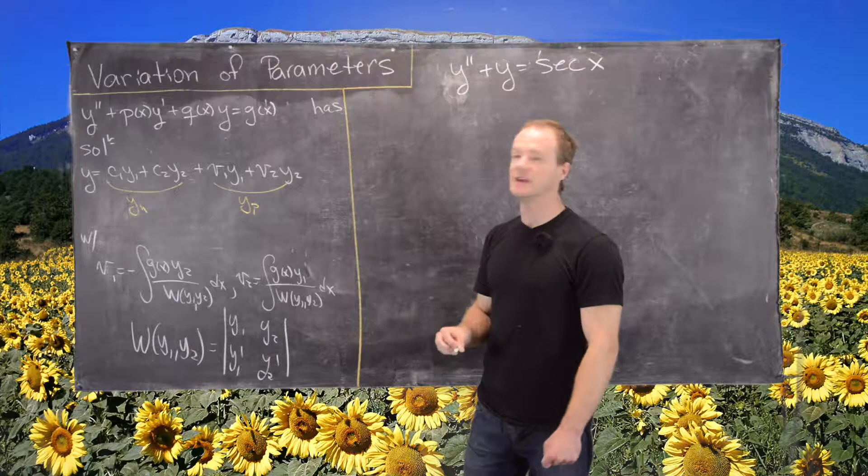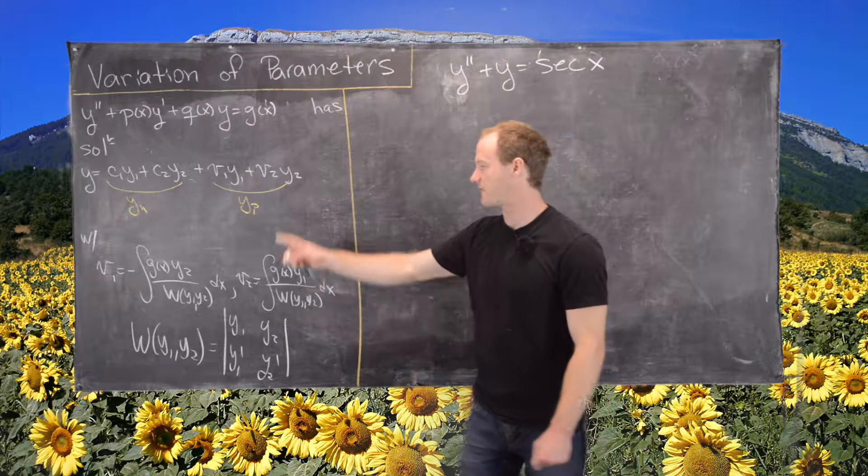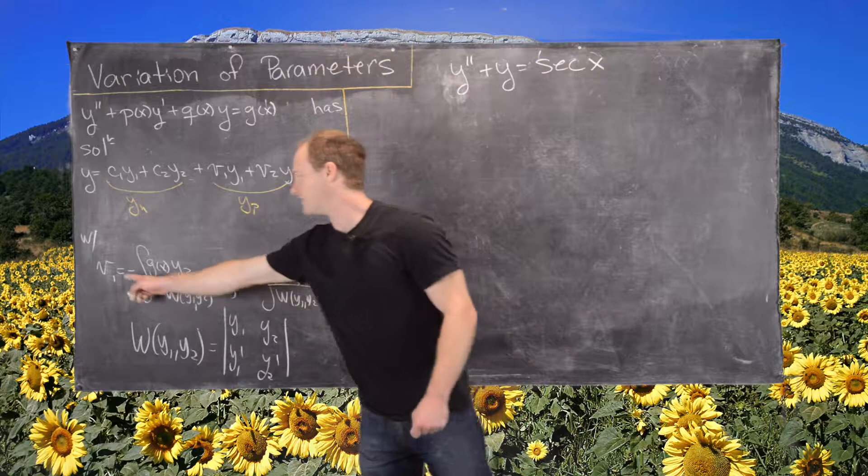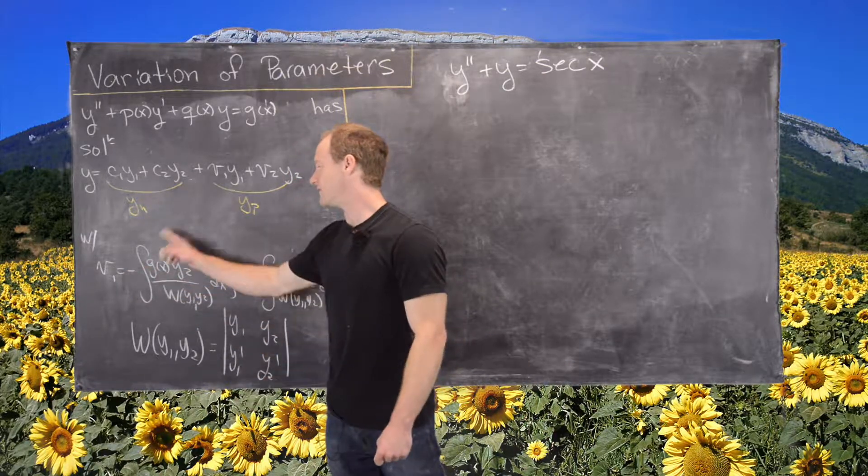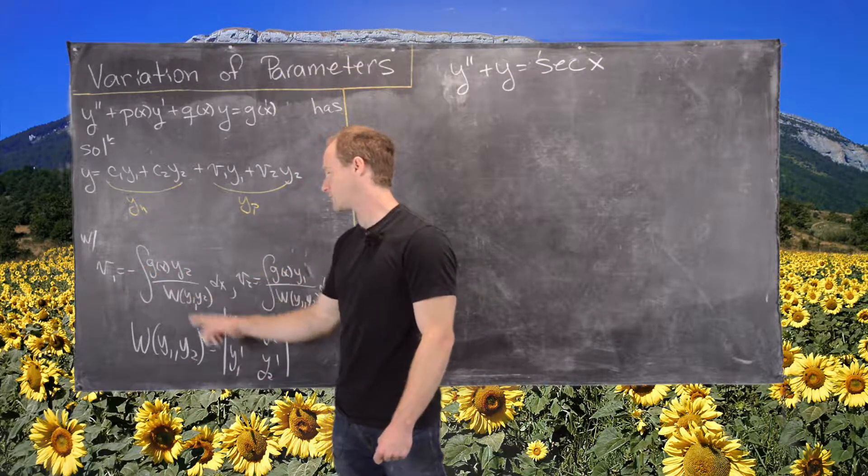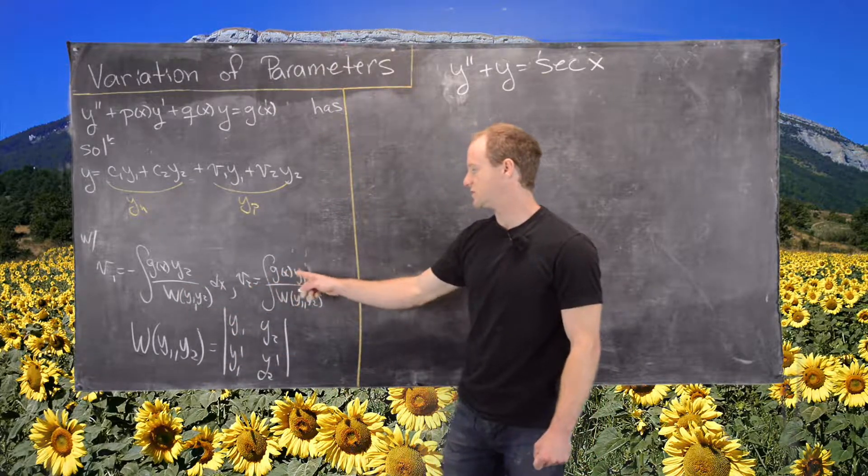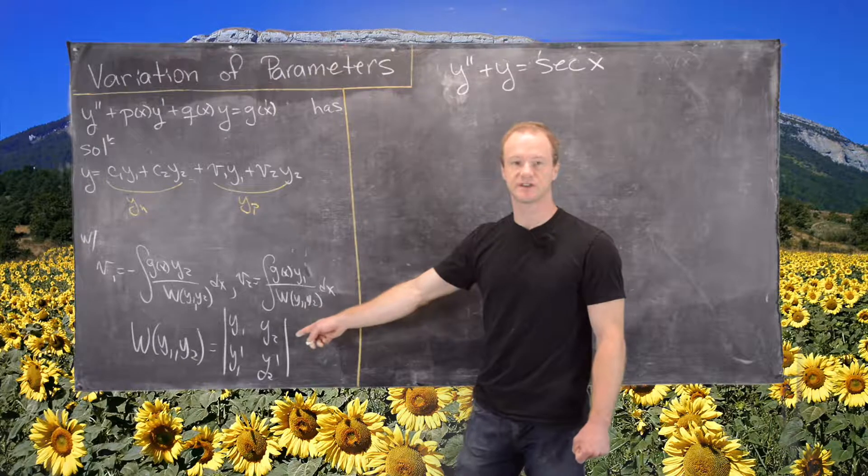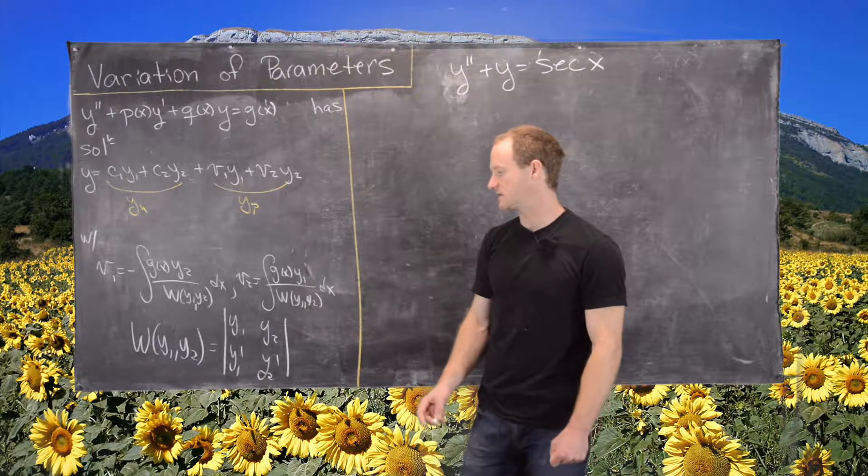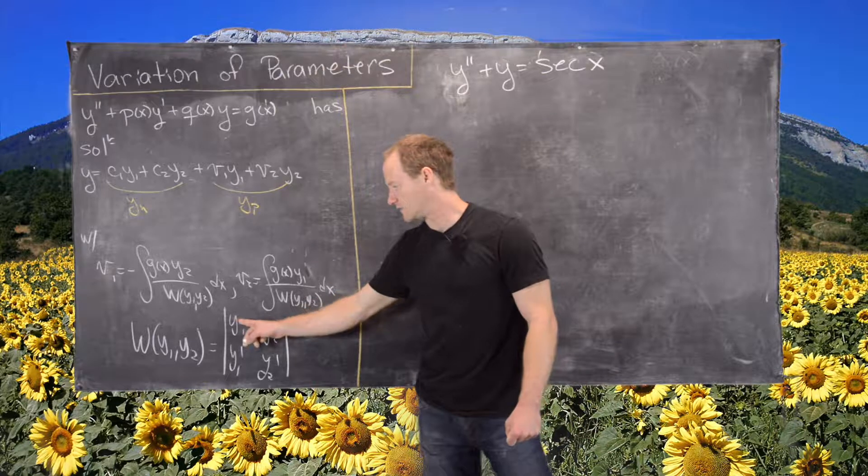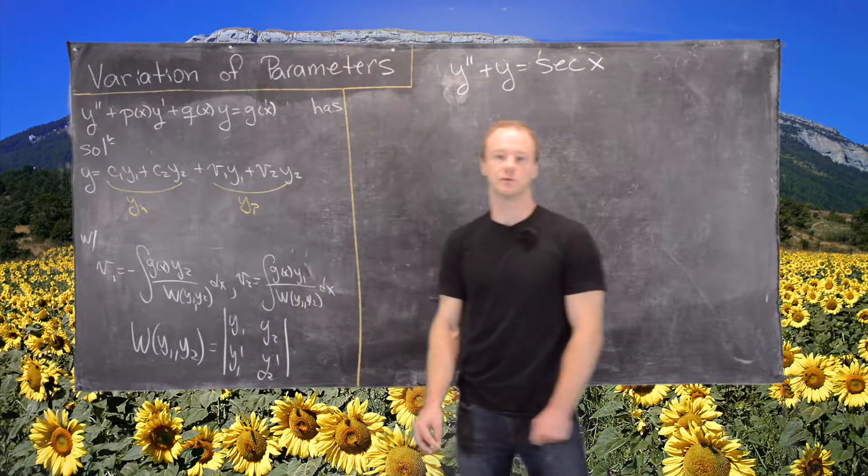And then these functions v1 and v2 are given by the following formulas which we derived in an earlier video. So we have v1 is negative the antiderivative of g of x times y2 over the Wronskian. v2 is g of x y1 over the Wronskian. And just as a reminder, this W is the determinant of the matrix column-wise y1, y1 prime, y2, y2 prime.